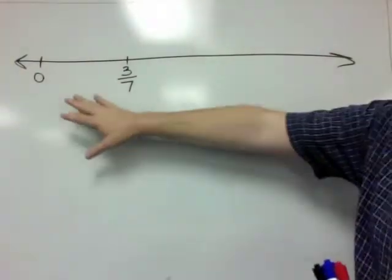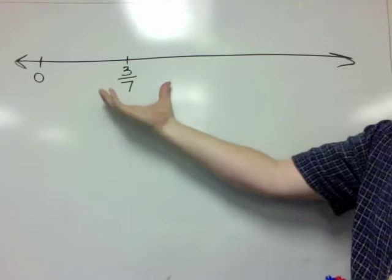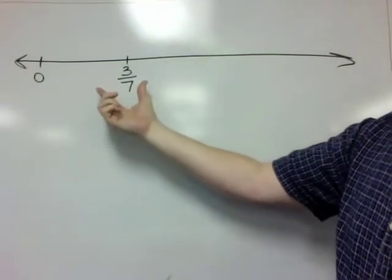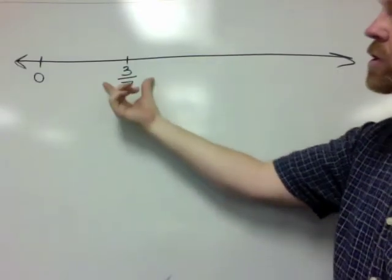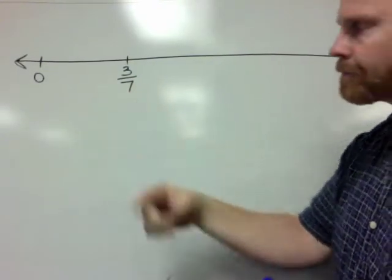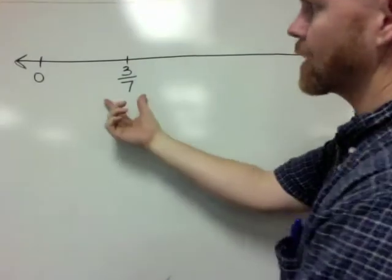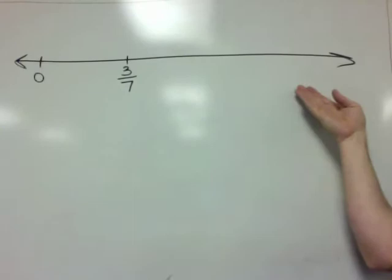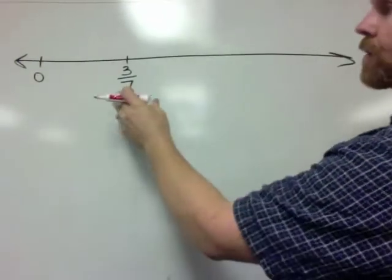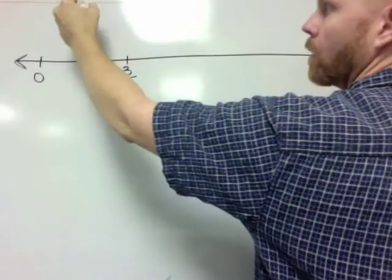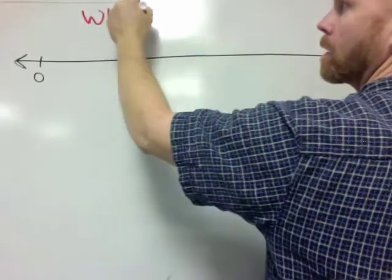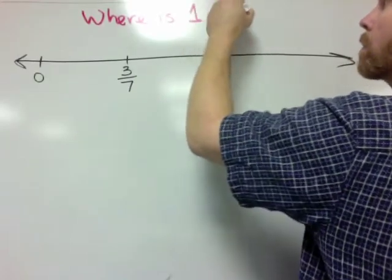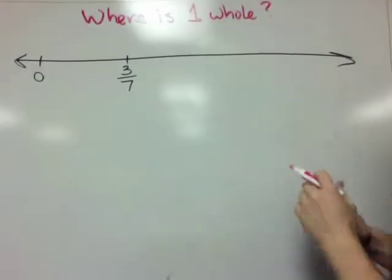In this video we're going to learn a little bit more about what is a fraction, only this time we're going to talk about where is one whole in relation to the fraction that we're given. So in this fraction we've got the zero, we've got the three-sevenths, and here's a big old empty number line, and our task is to figure out where is one whole on this number line.